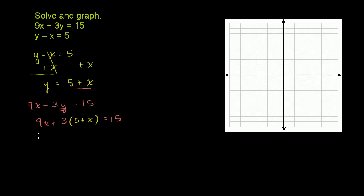And now we can just solve for x. We get 9x plus 3 times 5 is 15 plus 3 times x is 3x is equal to 15. So we can add the 9x and the 3x. So we get 12x plus 15 is equal to 15.